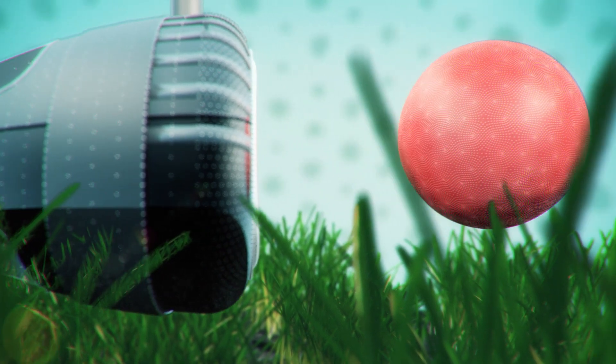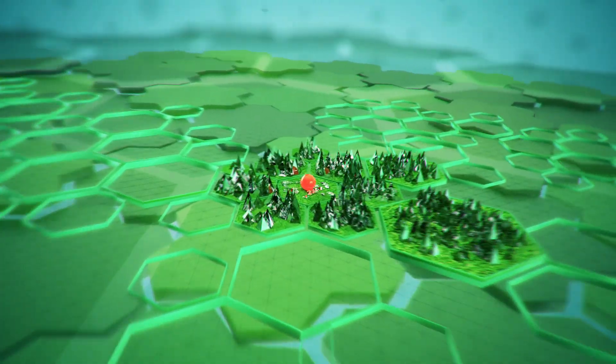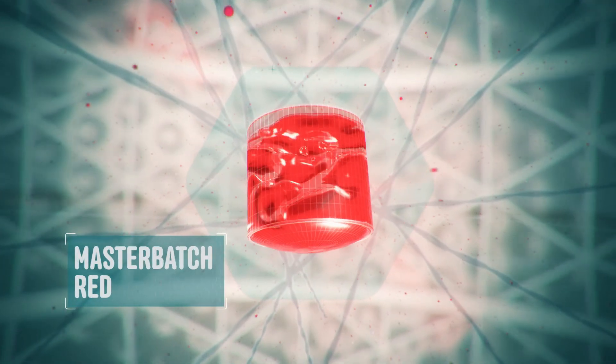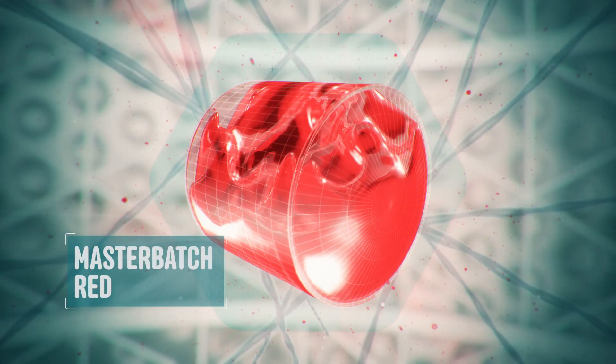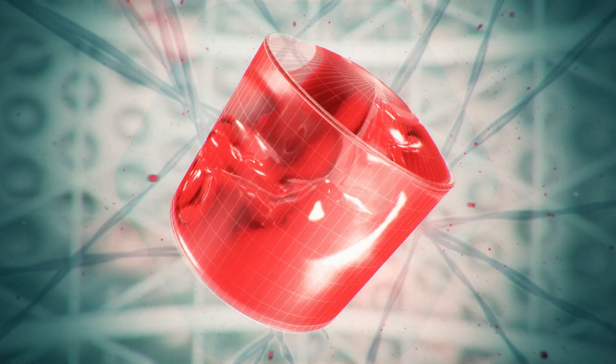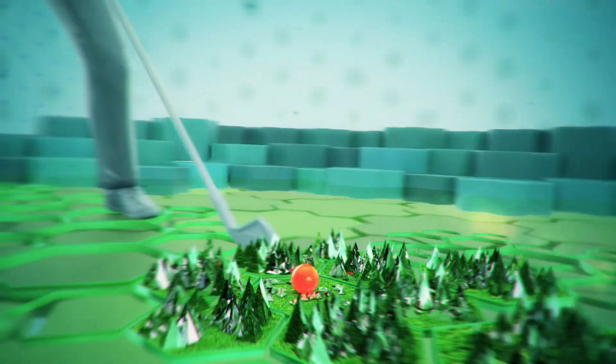When you go looking for your ball, it may be easier to find thanks to masterbatch red, a polymer used for coloring. Just one more way modern technology suits this ancient sport to a tee.